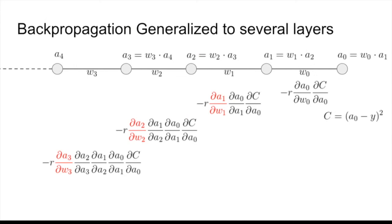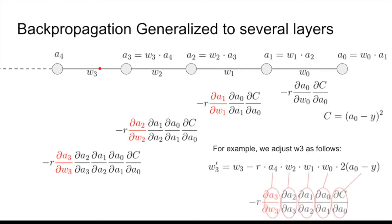We can also generalize this for several layers. The chain rule of differentiation works every single time — all we have to do is add another gradient factor for the rate of change of each activation with respect to the weight in question, while the front part carries over from the previous layers. So, for example, adjusting weight three would look like: weight three minus the learning rate times the activation of the previous layer, times the weights in front, times the derivative of the cost function.